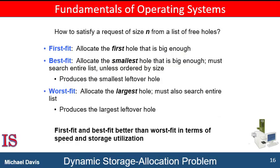How do we determine which of the available blocks an incoming process will be assigned? This is the General Dynamic Storage Allocation Problem, which concerns how to satisfy a request of some size from a list of available blocks. There are many solutions to this problem, but the first fit, best fit, and worst fit strategies are the ones most commonly used to select a free block from a set of available blocks.